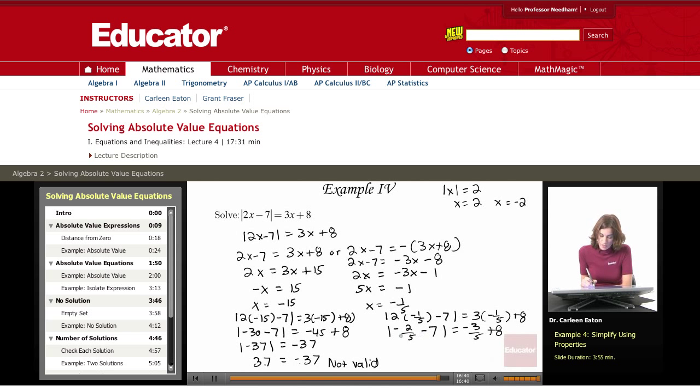So then adding these two together, I'm going to get the absolute value of negative 7 and 2 fifths equals 8 minus 3 fifths is 7 and 2 fifths.